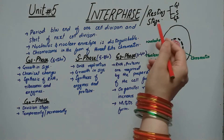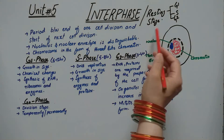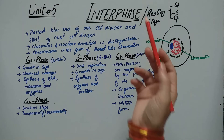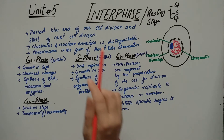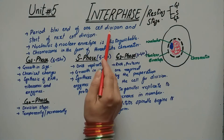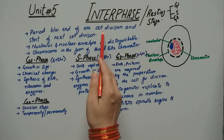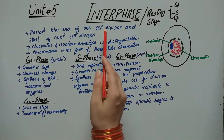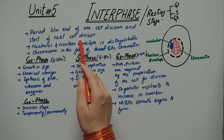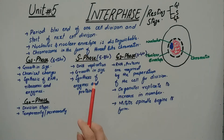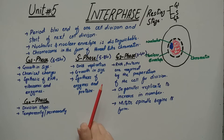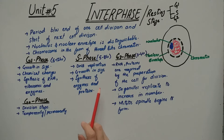Interphase is the resting stage — the time duration during which the cell does not divide. It is the period between the end of one cell division and the start of the next cell division. During this entire duration, before the cell divides and is ready to go, this period is called interphase or the resting stage.